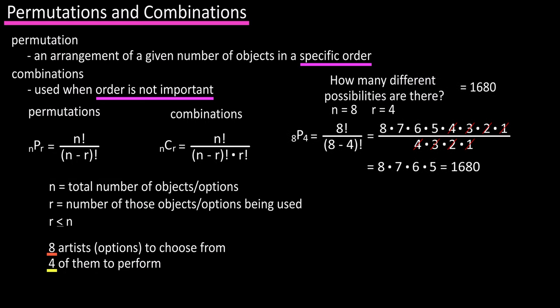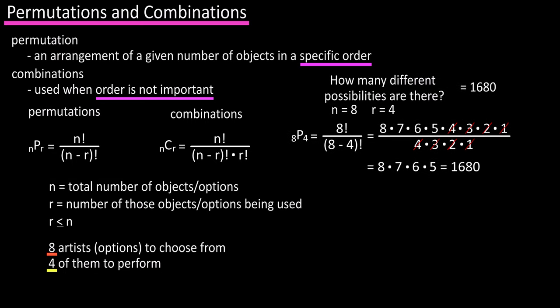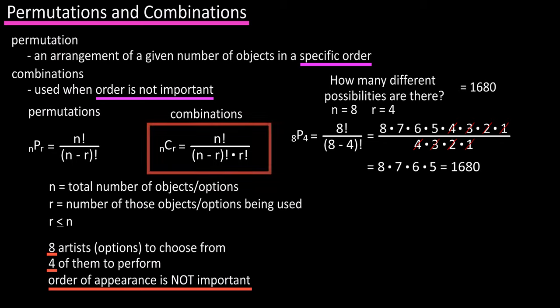Now let's take the same example, eight artists to choose from, and you're selecting four of them to perform, but the order of appearance is not important. So in this situation, we'll use the combination formula.